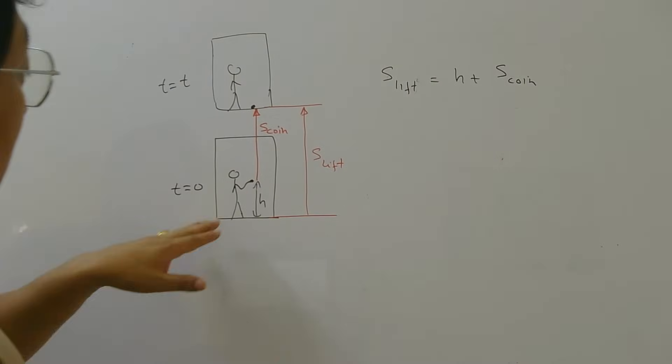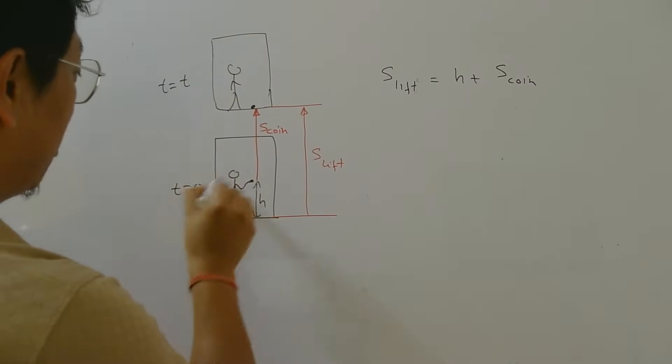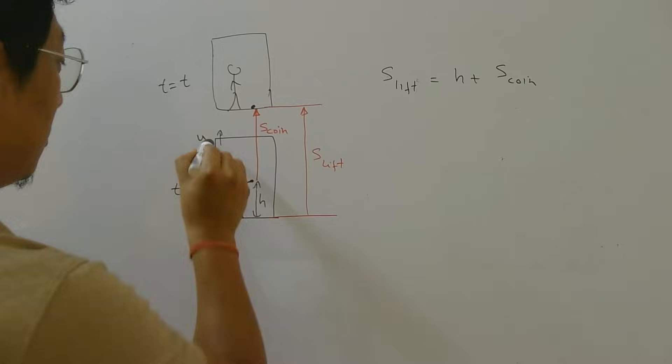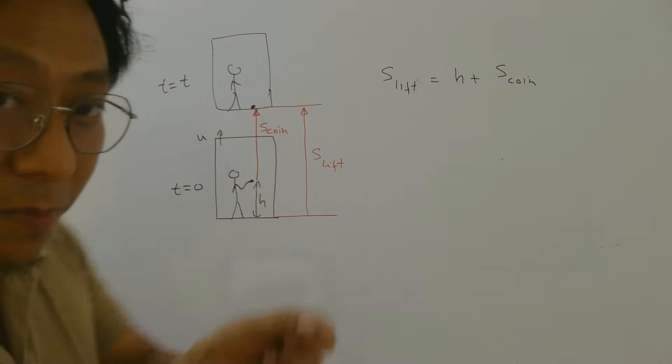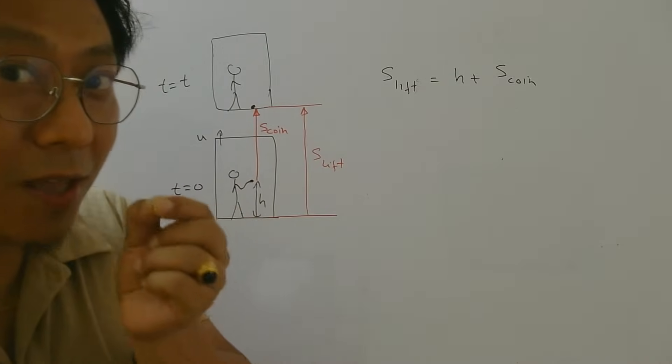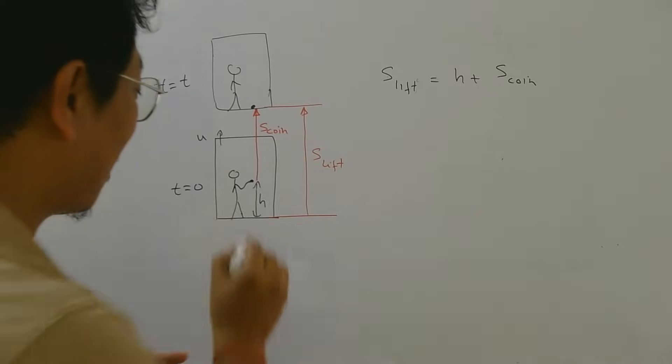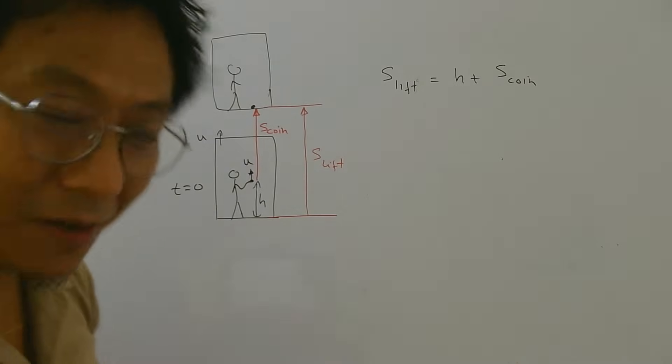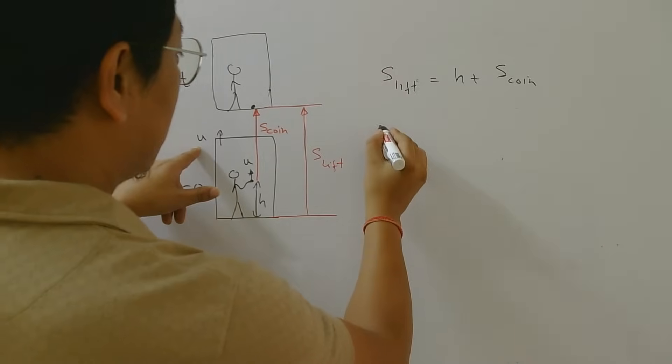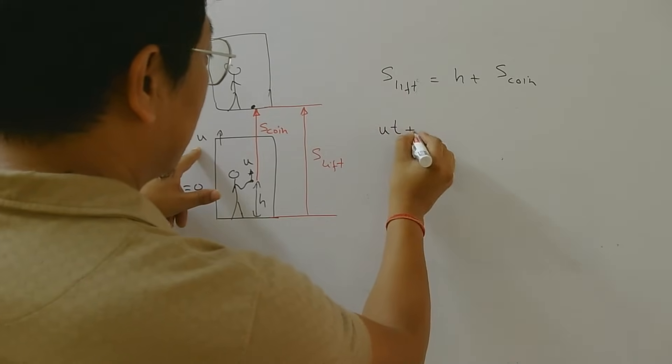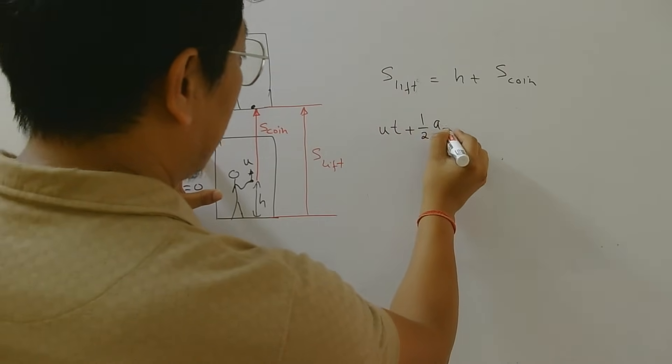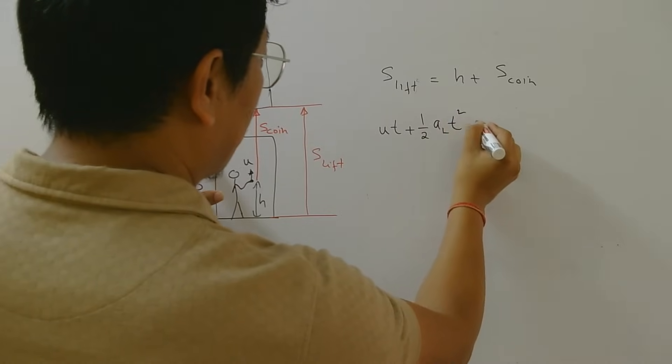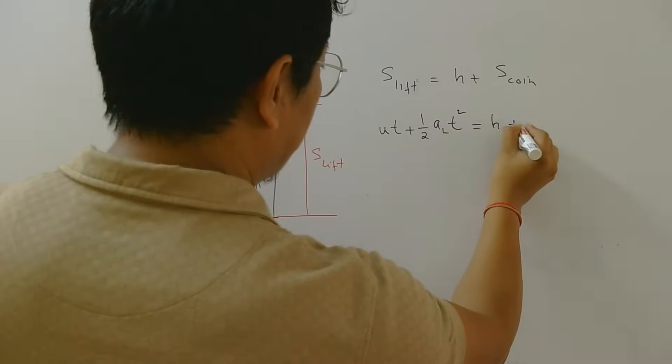Now what is the velocity of the lift at this moment? I don't know. Let us assume u. So at t = 0, remember the coin was still on his hand, right? So at that point, coin also will have that velocity only. So displacement of lift will be initial velocity into t plus half into a of the lift t square equal to h plus.